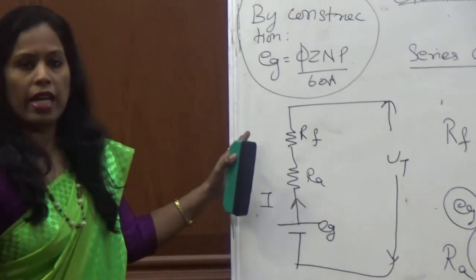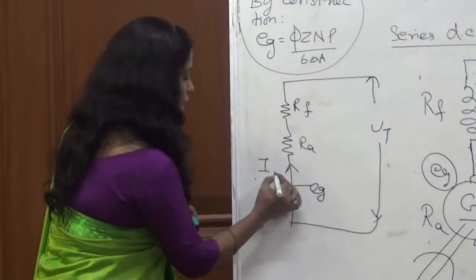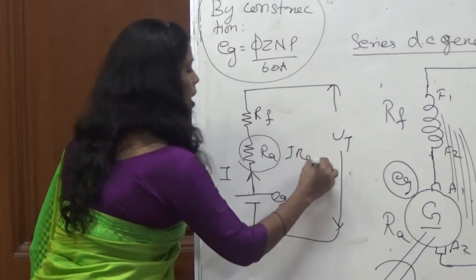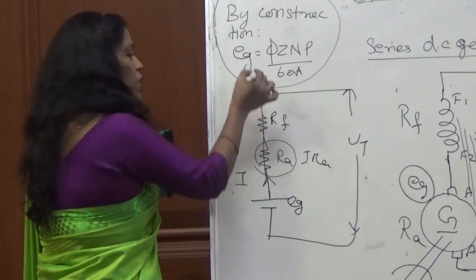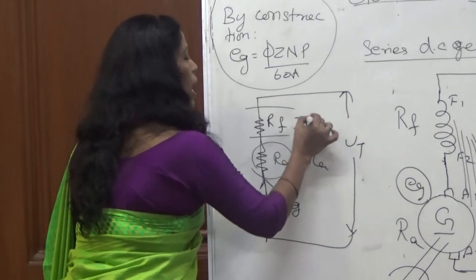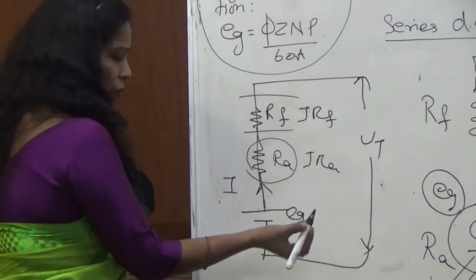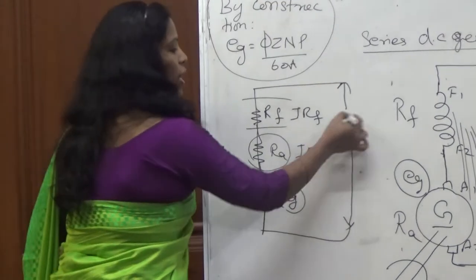This is the equivalent circuit. Now from this EG, when the current flows to this RA, it makes a drop, so that is I·RA drop. Same current flows here, it makes a drop, I·RF drop. Now we want to find out—you can find out EG or you can find out VT.